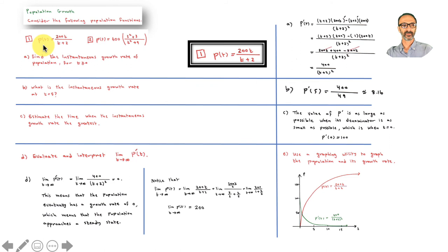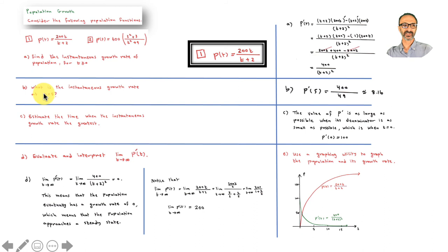Also, use a graphing utility to graph the population function and the growth rate (p prime). This connects the graphs of f and f prime to something real. For problem one, apply the quotient rule to find p prime — the result is 400 over (t plus 2) squared. Plugging in t equals 5 gives approximately 8.16.